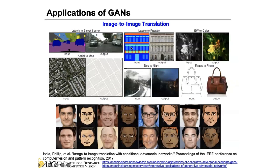We can also do labels-to-buildings translation, grayscale image to color — taking grayscale images and adding vivid color — and other image-to-image translation tasks using GANs.